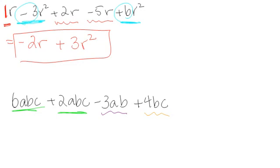The only ones we can add are the green ones. So the green ones, there's six plus two of them, so that means there's eight abcs, and the other two stay exactly the same. We can't add or subtract them.